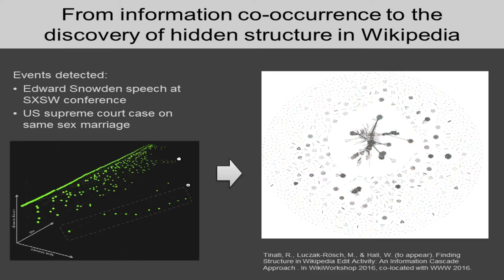With the method of information co-occurrence we can map information in three-dimensional space and do a lot of quantitative analysis, but we used it basically just for temporal sampling — sampling out messages and applying that to the Wikipedia edit history. We were able to unmask events with further qualitative implications: detecting a burst in edit activity around a particular set of sites when Edward Snowden gave a speech at an SSW conference, and another event related to a US Supreme Court case on same-sex marriage. Both cases immediately call for further research into whether there is some form of political bias injected into Wikipedia.